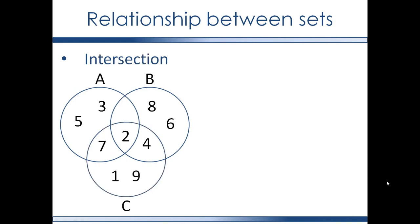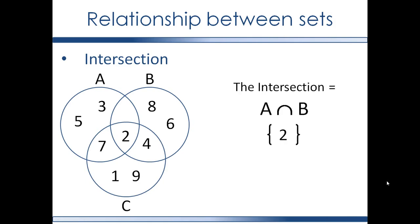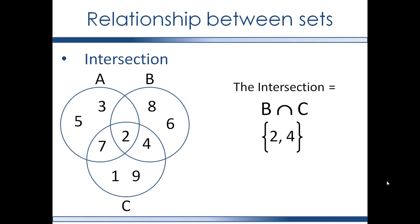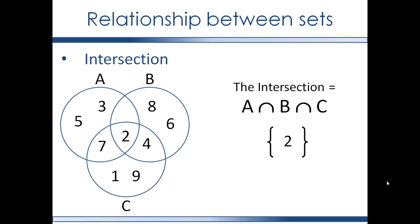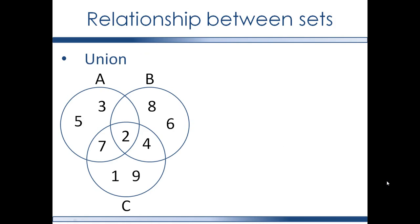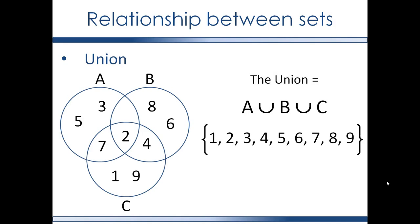Here are some examples of intersections and unions with three sets: the intersection of A and B, the intersection of A and C, the intersection of B and C, the intersection of A, B, and C, and the union of A and C.